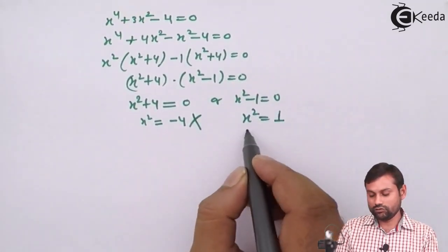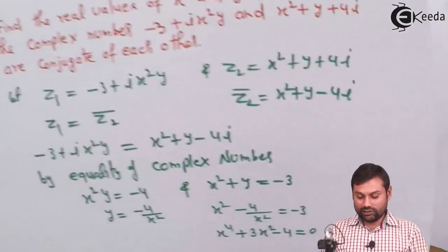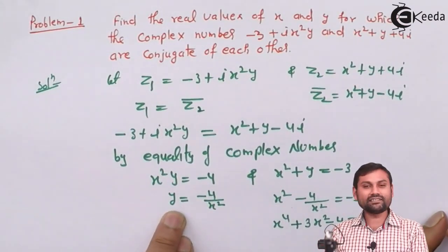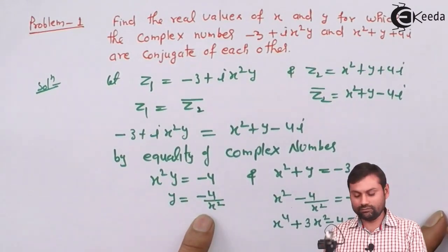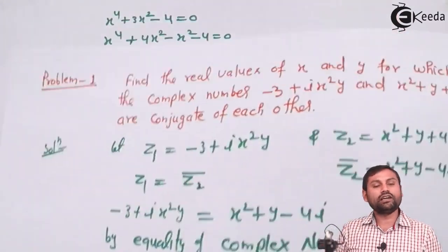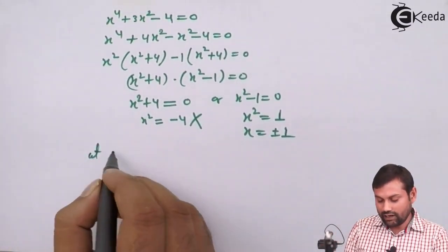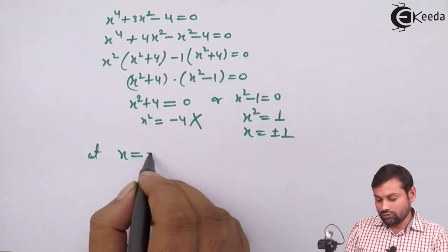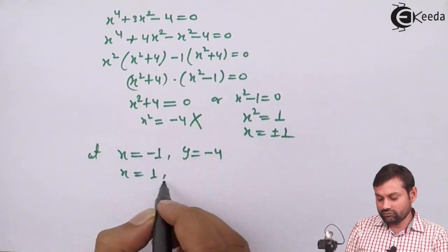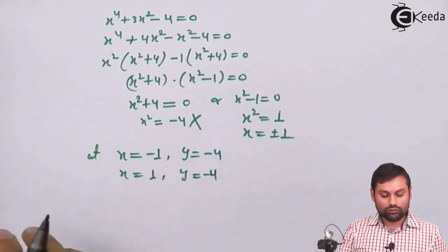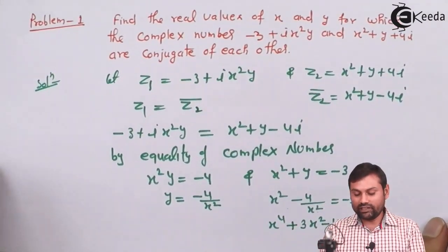यहाँ से x² equals to 1, so x equals to plus minus 1। x = minus 1 डालेंगे तो y = minus 4 upon 1 = minus 4 मिलेगा; x = plus 1 डालेंगे तो again y = minus 4 मिलेगा। So at x = minus 1, y = minus 4, and at x = plus 1, y = minus 4 — दोनों cases में y की same value मिलती है।